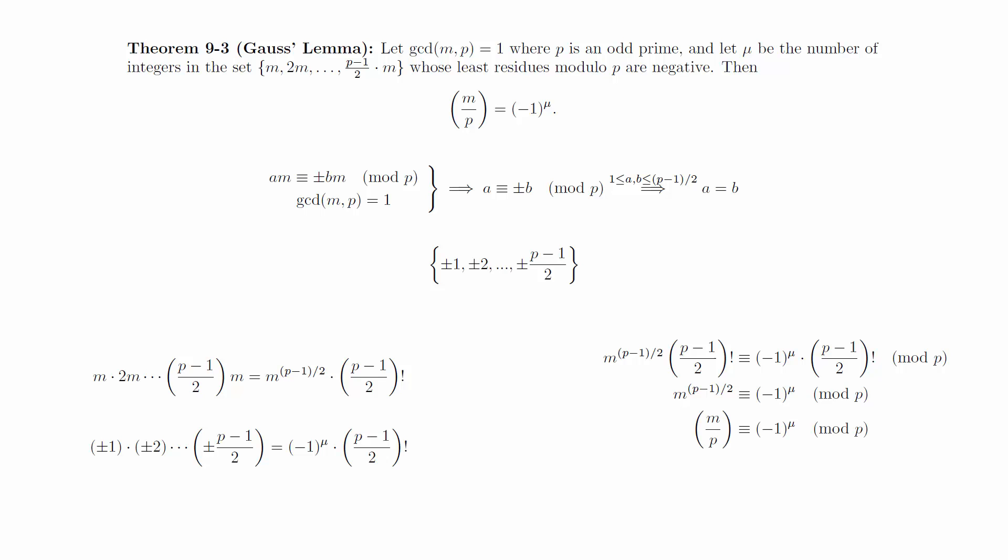We can divide out the ((p-1)/2) factorial from both sides and apply Euler's criterion to conclude the desired result. We can actually convert the equivalence to an equal sign because the actual value of both expressions is plus or minus 1.